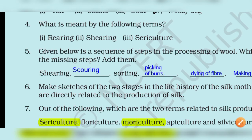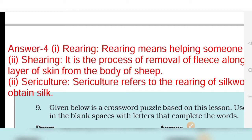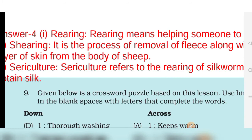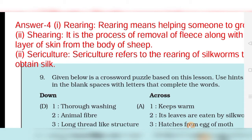Question number 4 asks about the meaning of the following terms. First is rearing — rearing means helping someone to grow up, that is, raising and caring for an animal. Second is shearing — that is the process of removal of fleece along with a thin layer of skin from the body of the sheep.